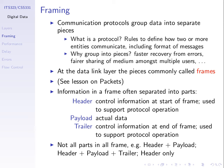Why group data into smaller pieces? If you need to retransmit, retransmitting just a small piece is much better than retransmitting everything. We'll call these pieces frames — sometimes they're called packets or messages, but at this stage we'll refer to them as frames. What is the format of a frame? What does it look like?